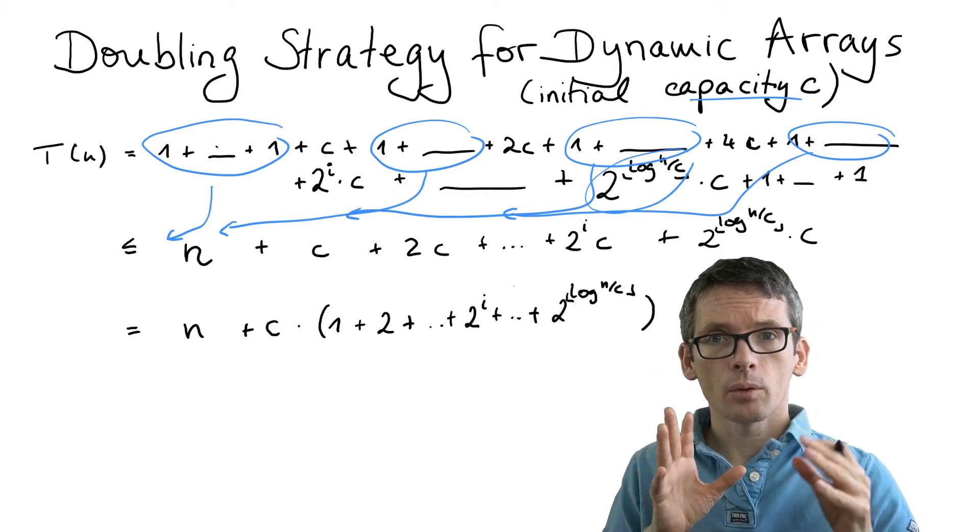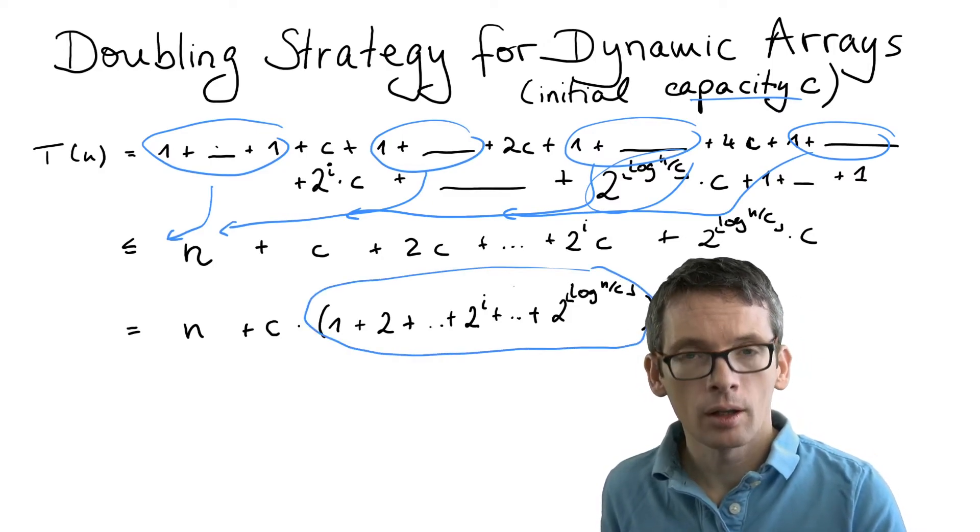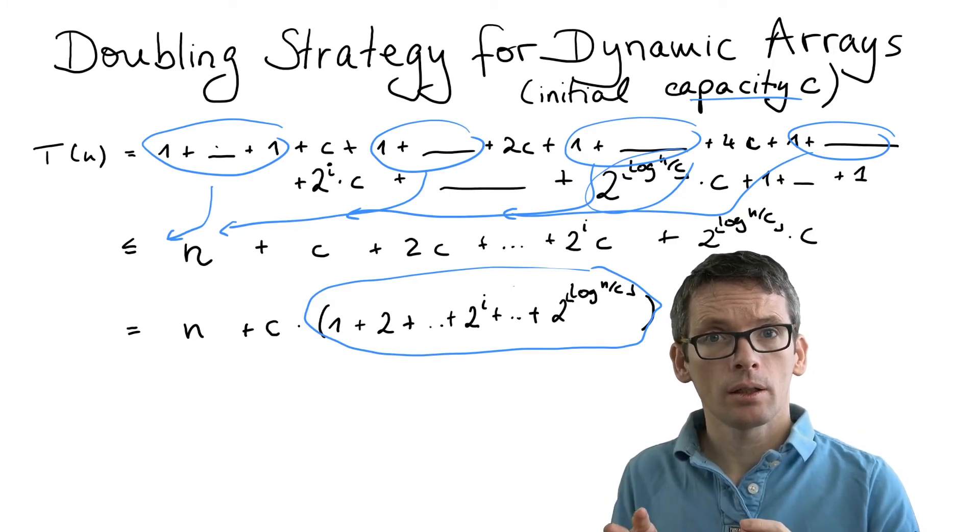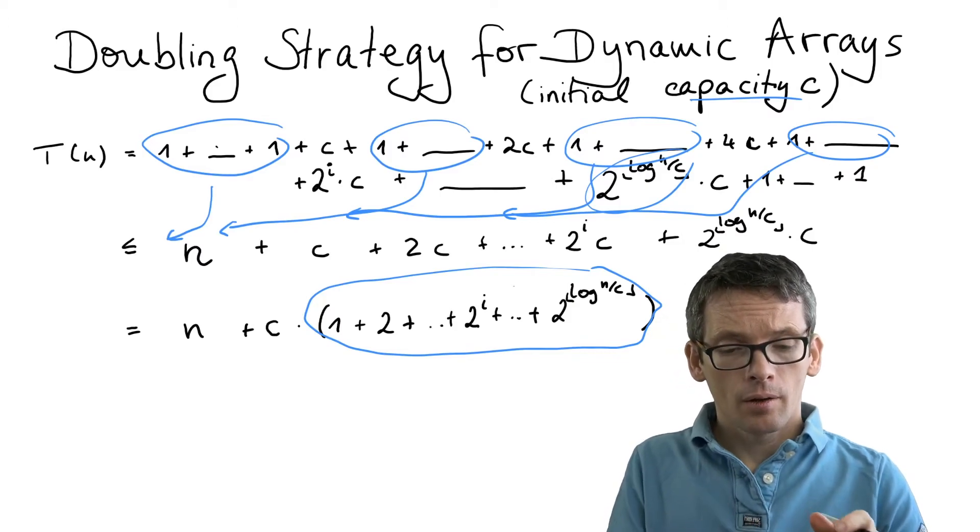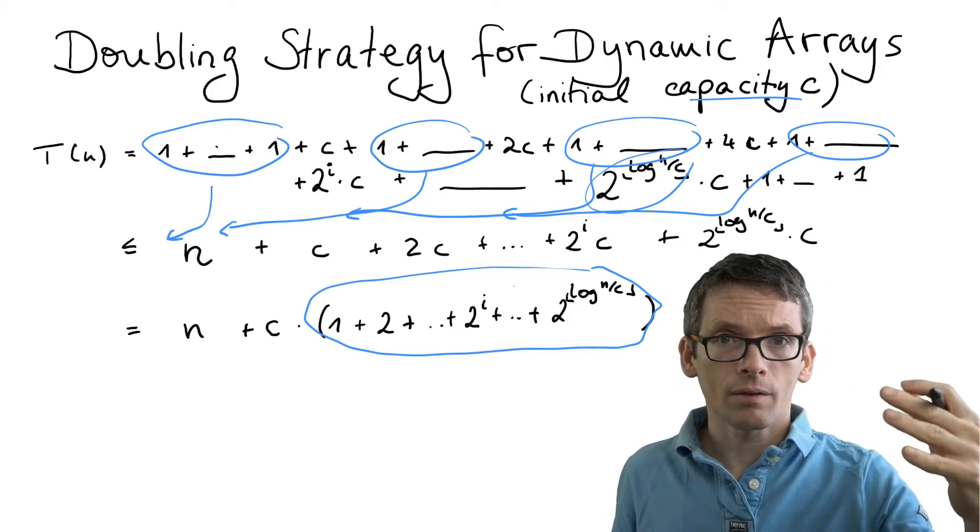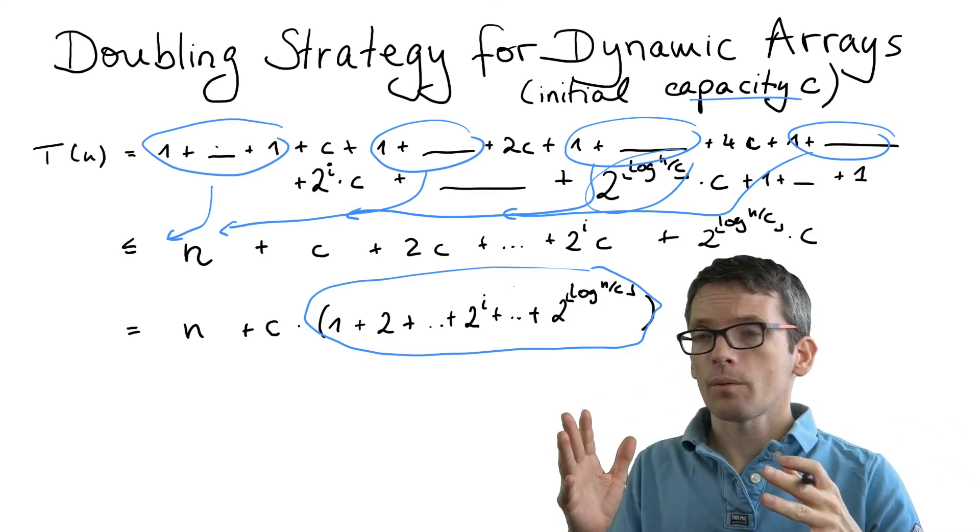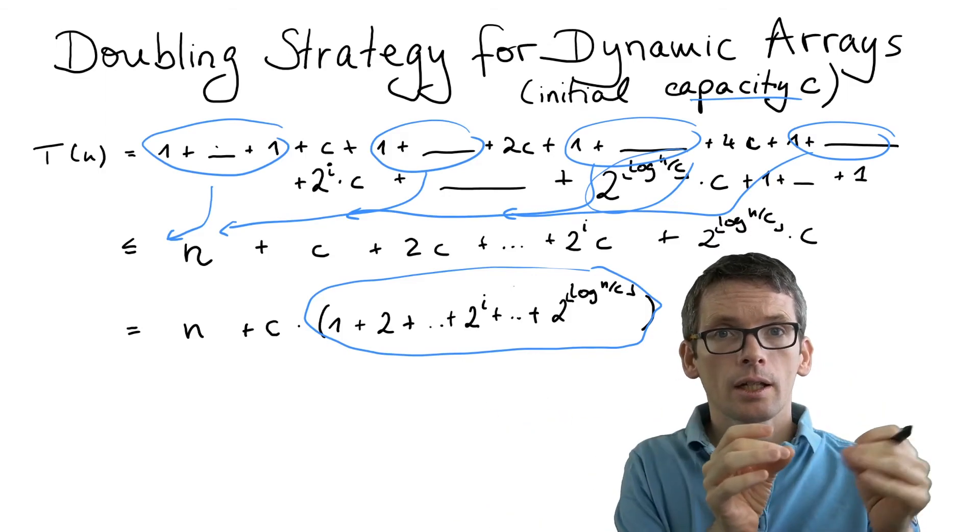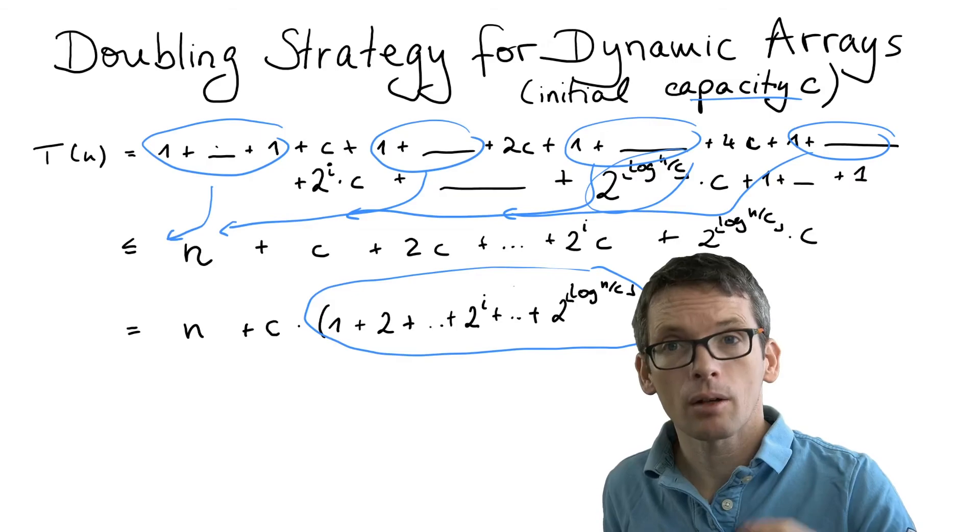Now it remains to evaluate this sum here and that is a so-called geometric series with 2 as a base and we know what that is. So this is namely the last term, 2 to the log n divided by c, times 2 minus 1. So you know this from, for instance, 1 plus 2 plus 4 plus 8 is 8 times 2, 16 minus 1, 15. And that holds in general and we can plug that in here.